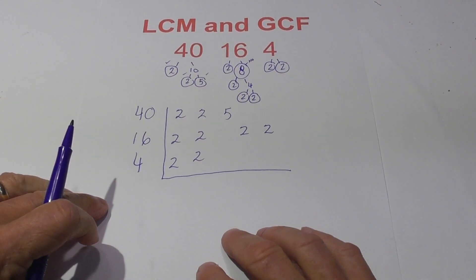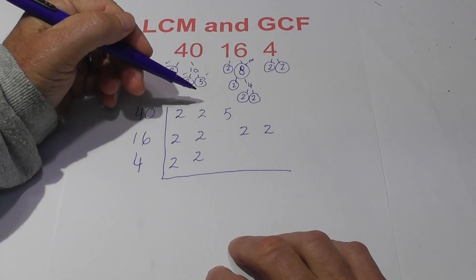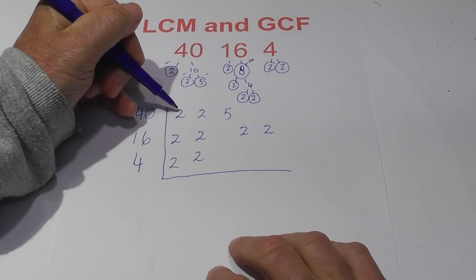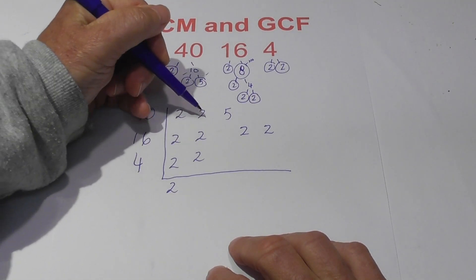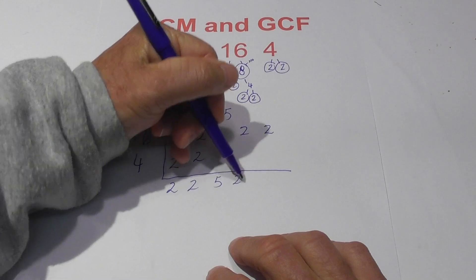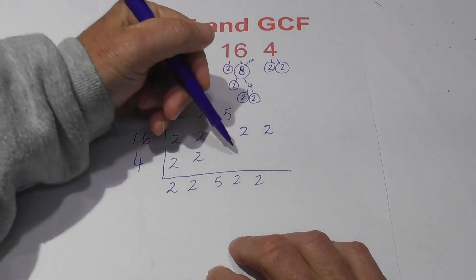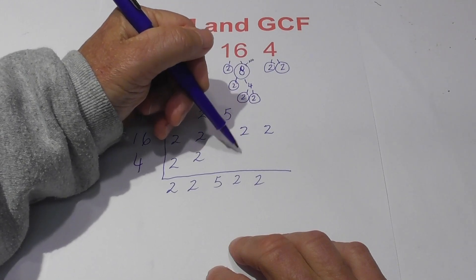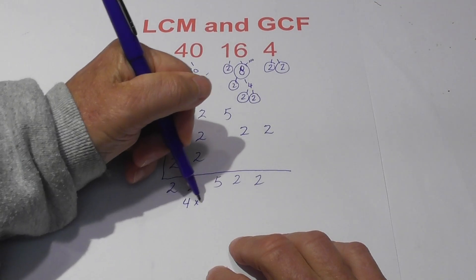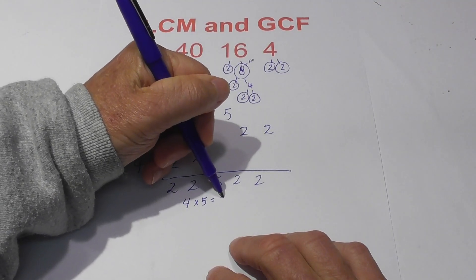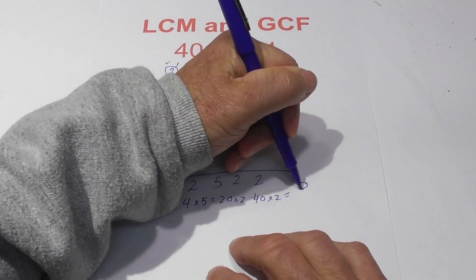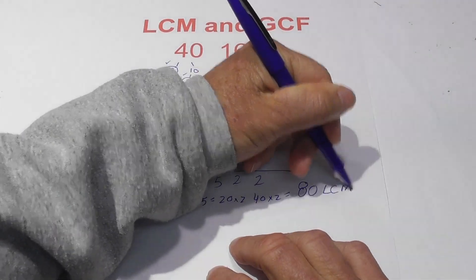For the LCM, we know the rule: if you have 2 or more in a column, then only bring down one number. So I have 3 here, so I am going to bring down one number, bring down one number, I have only got one 5 so I will bring a 5 down, and I only have one 2 and one 2. Even if I did have two 2's here, I would still bring down just one 2. Now multiply this together: 2 times 2 is 4, times 5 is 20, times 2 is 40, times 2 is 80. So the LCM is 80.